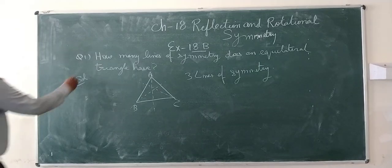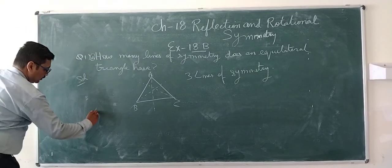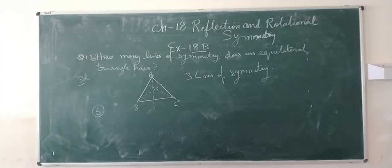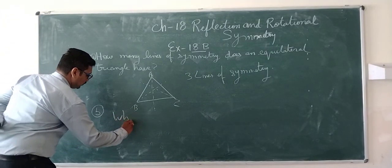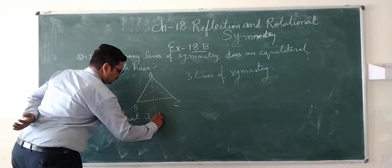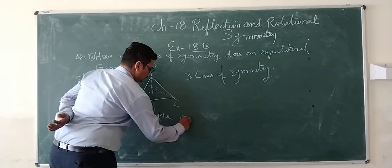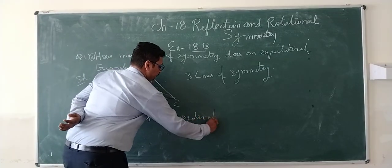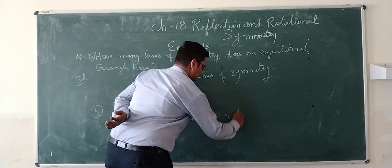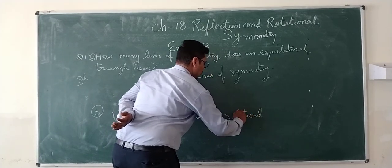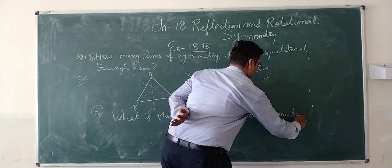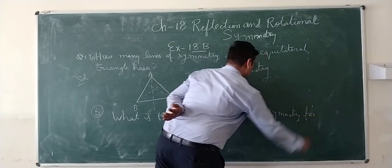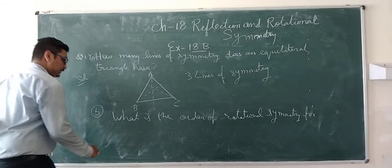Now the second part is: What is the order of rotational symmetry for equilateral triangle?